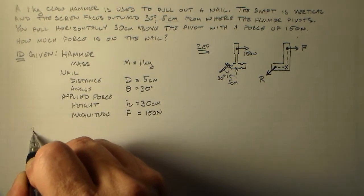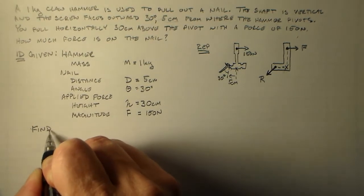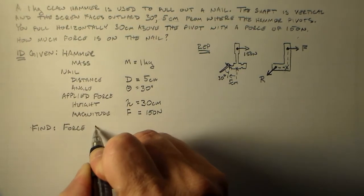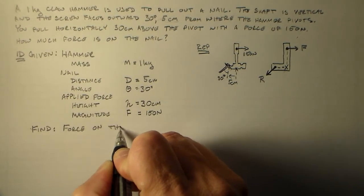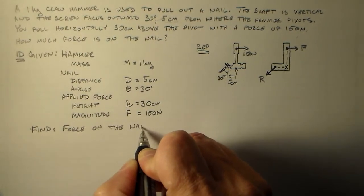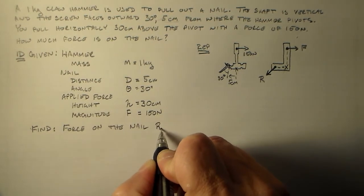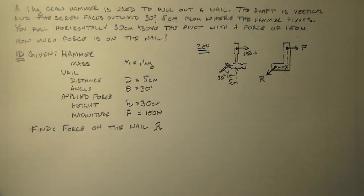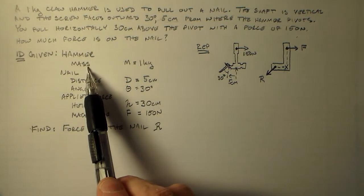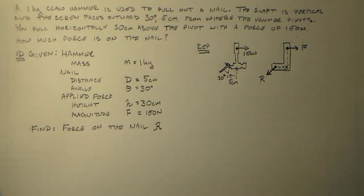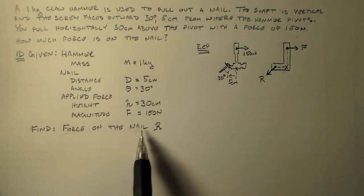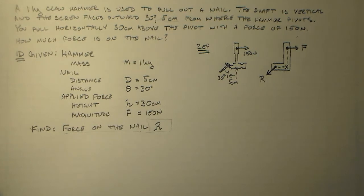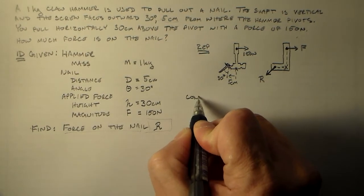And what would we like to find? We'd like to find the force on the nail. And we'll call that R. So you need all of these parts when you're doing one of these problems. You need to name something. Give me a symbol. Give me the value. You want to find something. What you want to find has a variable name. This is physics. That's what we look for.